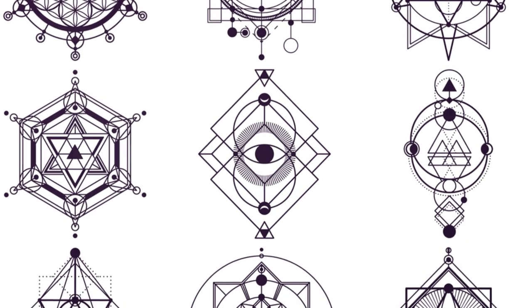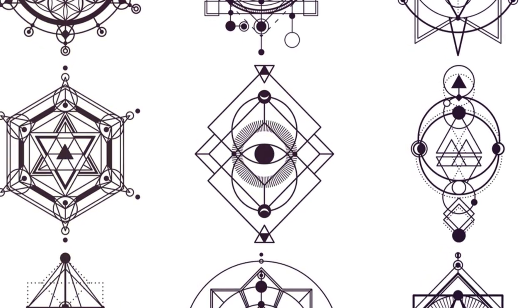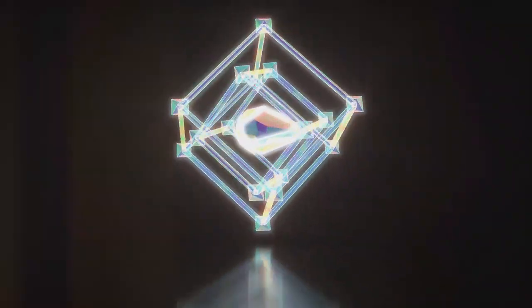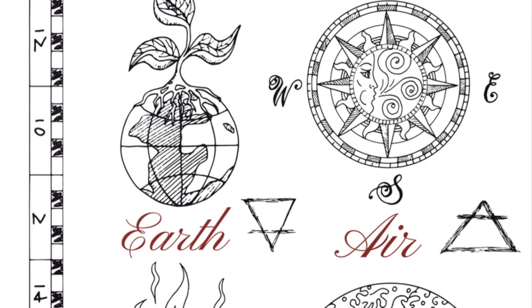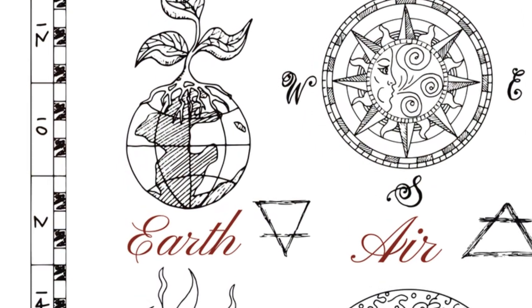Metatron's cube contains all the platonic solids, which are the building blocks of all physical matter. Each of these solids corresponds to one of the classical elements: earth, water, air, fire and ether.